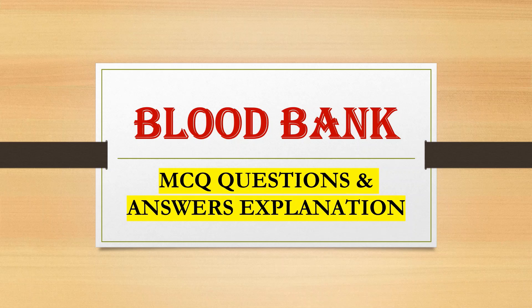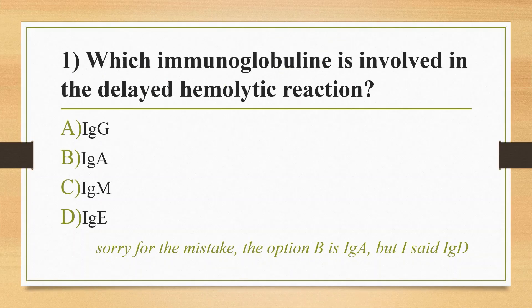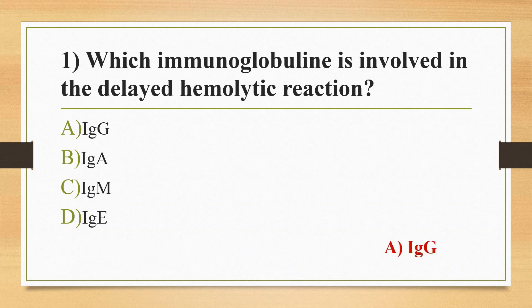First question: which immunoglobulin is involved in the delayed hemolytic reaction? Option A: IgG. Option B: IgD. Option C: IgM. Option D: IgE. The answer is option A, IgG. IgG is an incomplete antibody which causes delayed hemolytic reaction.